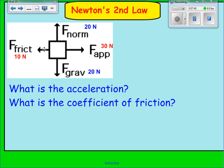Let's look at some practice problems. Taking the situation we just looked at: force normal and gravity are balanced at zero, but the x-forces of friction and applied are not equal. We've already established that the net force in this example is a positive 20 newtons — that's the 30 opposing the 10 — so 20 newtons to the right.